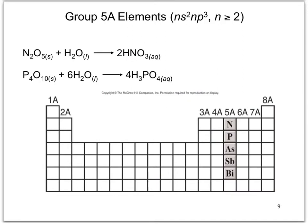Group 5A elements contain nitrogen, phosphorus, arsenic, antimony, and bismuth. Nitrogen and phosphorus have oxides that react readily with water to form acids. These are called acid anhydrides, which means acids without water.